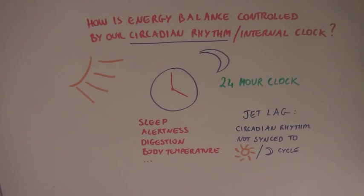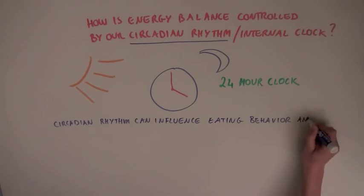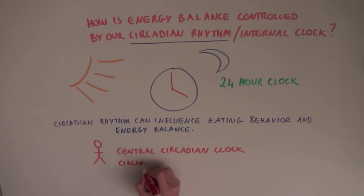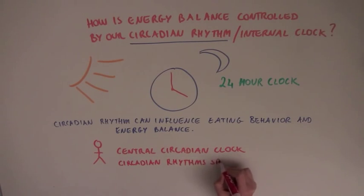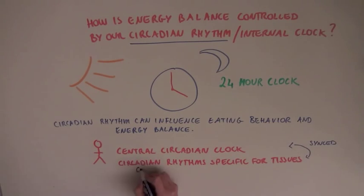So our circadian rhythm can influence our eating behaviors, and therefore, our energy balance. This circadian rhythm I'm talking about is the central circadian clock that responds to the day-light cycles to control behavior. But there are also circadian rhythms, specific for different tissues, that are synced with the central circadian clock, and that control the behavior of that specific tissue.